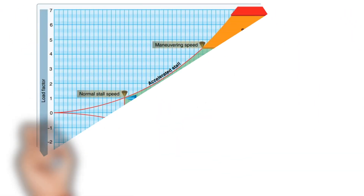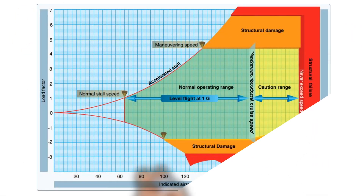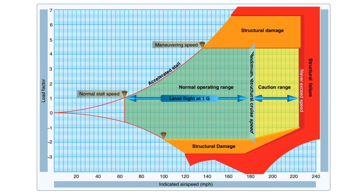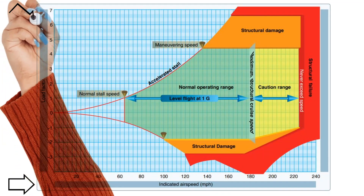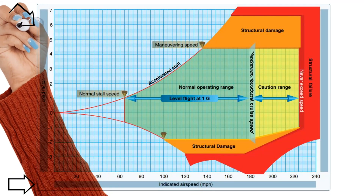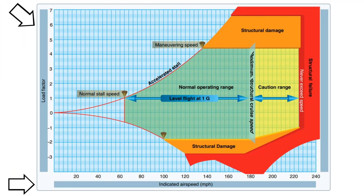Let's look at this Velocity Load Factor chart from the Pilot's Handbook of Aeronautical Knowledge. This chart shows the indicated airspeed on the horizontal axis and the load factor on the vertical axis.